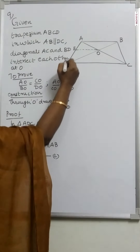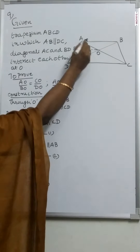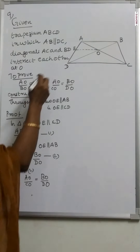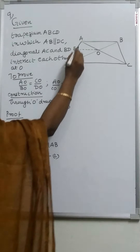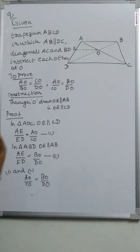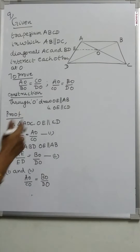Trapezium ABCD: AB is parallel to CD. In a trapezium, one pair of opposite sides is parallel. Diagonals AC and BD intersect each other at point O. We have to prove that AO by BO is equal to CO by DO.